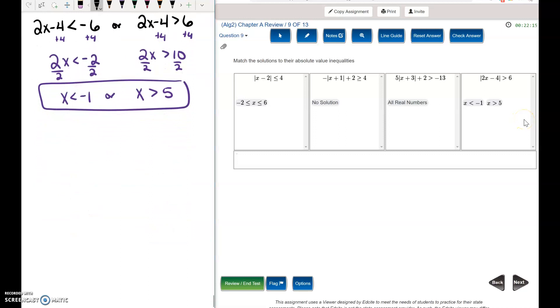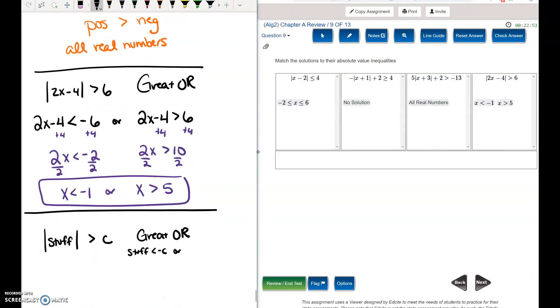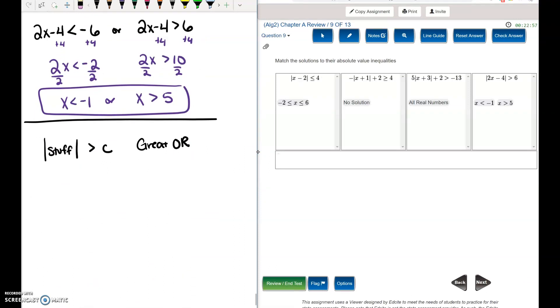Okay, let's write up a little guide in our notes that maybe would help us with this stuff. First one is absolute value of stuff is greater than something. What should I use for something? C. This is a great or problem. So you set it up. Stuff less than negative C or... I'm going to move this a little bit so I have more room. Stuff less than negative C or stuff greater than C.